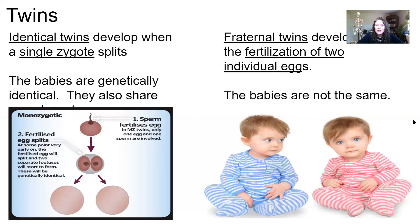Fraternal twins are the easiest to explain as two siblings with the same birthday who share nothing else. There are two eggs and two sperm — through some occurrence, both released at the same time. Therefore the two individuals will be in the uterus at the same time and be born at the same time, but they share no more genetic similarities than a normal pair of siblings.